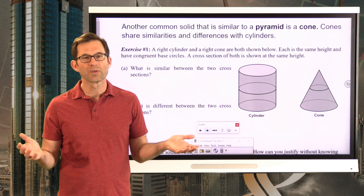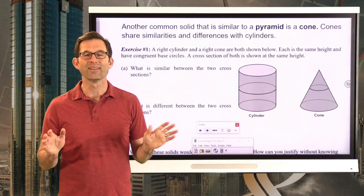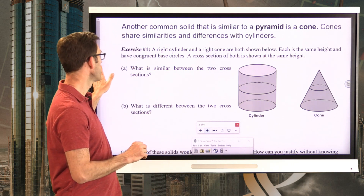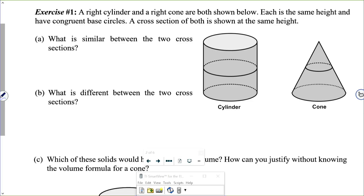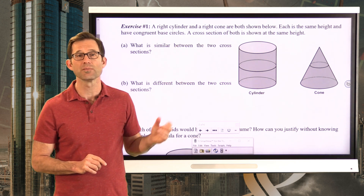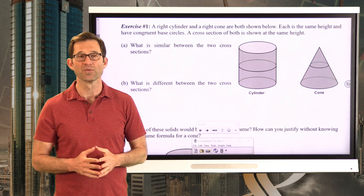Another common solid that's very similar to a pyramid is a cone. Cones share similarities and differences with cylinders, so that's where we're going to start. Let's take a look at exercise number one. A right cylinder and a right cone are both shown below. Each is the same height and has congruent base circles. A cross-section of both is shown at the same height. What is similar between the two cross-sections, and what is different between the two cross-sections?